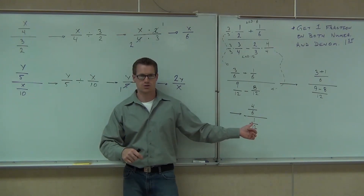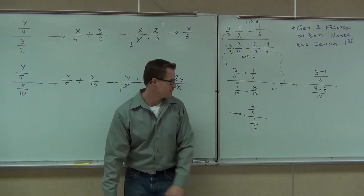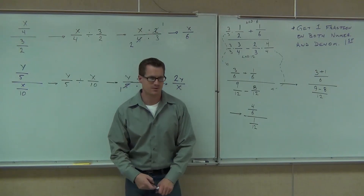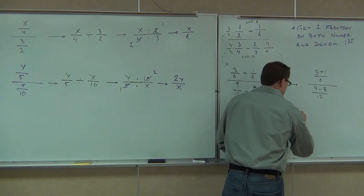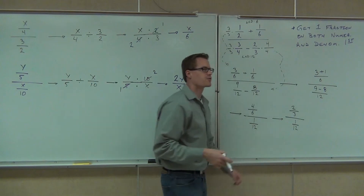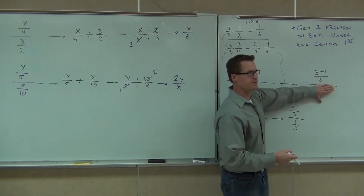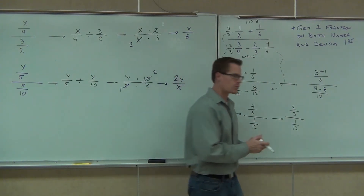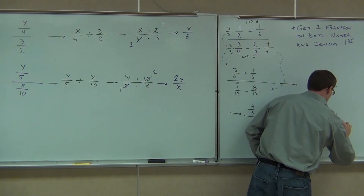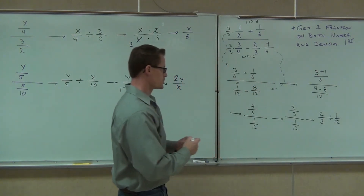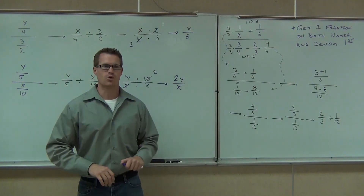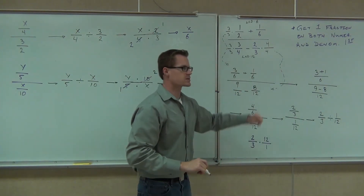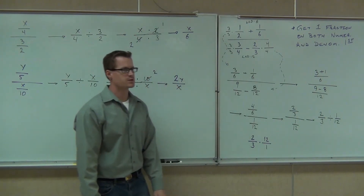Now we have two-thirds divided by one-twelfth — that's exactly what we're going to write. Two-thirds divided by one-twelfth. We know how to divide fractions, so this is really a non-problem anymore. We know we're going to reciprocate the second fraction. We'll have two-thirds times twelve over one. You could reduce four-sixths to two-thirds — divide both top and bottom by two, or write two times two over two times three and cross out those twos.